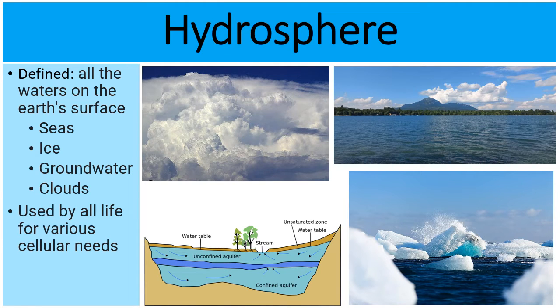And as water cycles from the sky to the ground to the oceans, back up to the sky, to the ground, to the oceans, as water cycles, it's used by all life for a variety of cellular needs. Earlier, we mentioned that water is one of the main ingredients during photosynthesis. And so water will be used during photosynthesis to help create glucose.